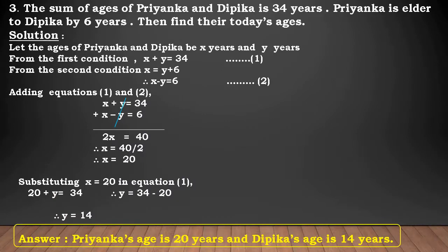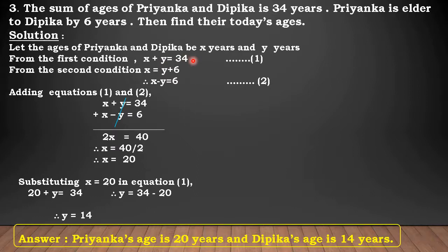Question number 3: the sum of ages of Priyanka and Deepika is 34 years. Priyanka is elder to Deepika by 6 years. Find their today's ages. Solution: let the ages of Priyanka and Deepika be X years and Y years respectively. From the first condition, X plus Y is equal to 34, since the sum of their ages is 34 years. Number this equation as 1.